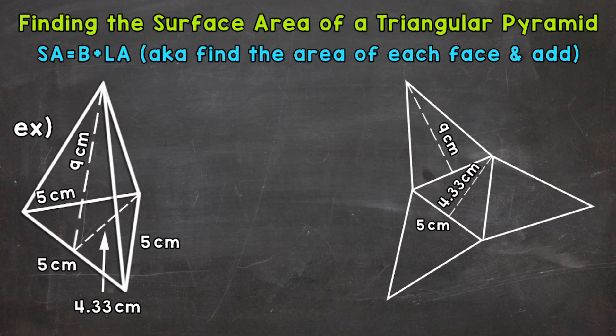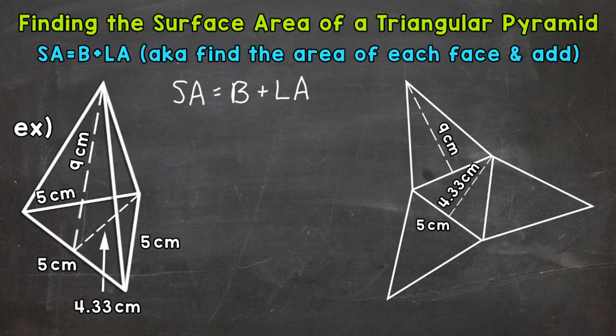There are a couple of different ways to work through these, so I'll show you different options for finding the surface area of a triangular pyramid. Let's jump into our example and start by writing out: surface area equals the area of the base plus the lateral area. Then we need to plug in our information. Let's use the net on the right side of the screen to help us do this.